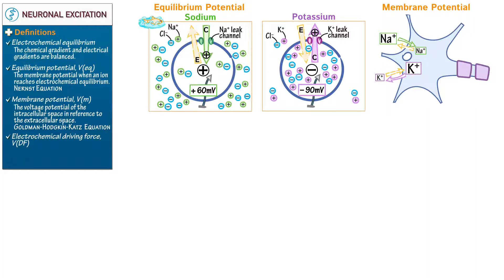As mentioned, potassium leak channels dominate the permeance of the resting neuronal cell membrane. Draw a voltmeter and indicate that the resting membrane potential is around negative 70 millivolts.